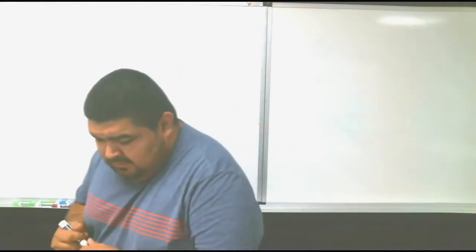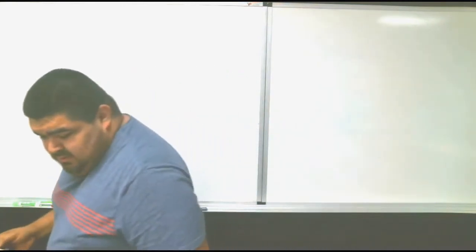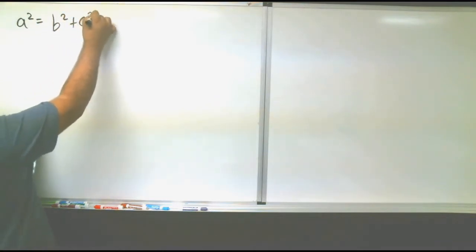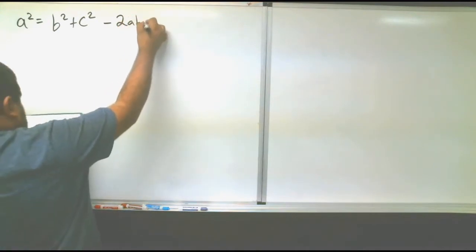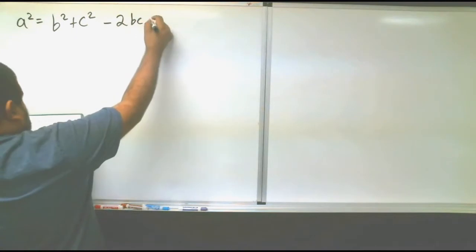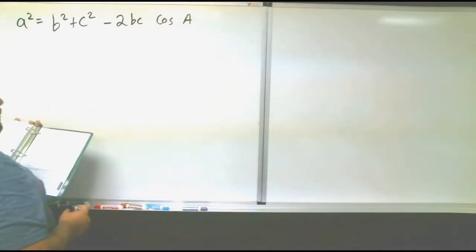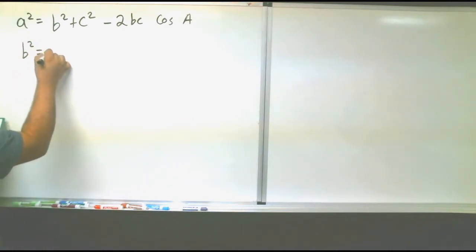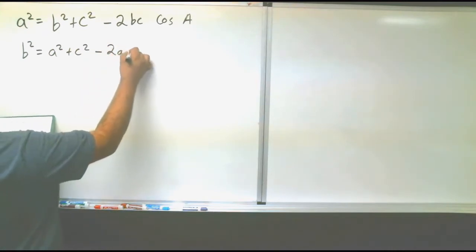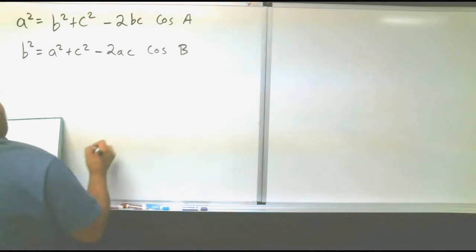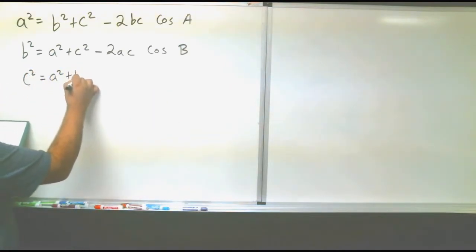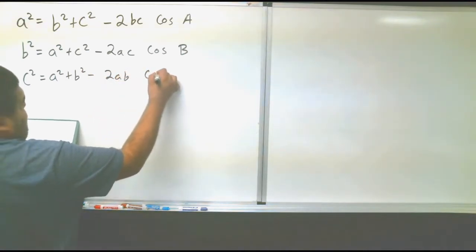Meaning that the equations we are using today are: a squared equals b squared plus c squared minus 2bc cosine of A. Then we have b squared equals a squared plus c squared minus 2ac cosine of B. Or c squared equals a squared plus b squared minus 2ab cosine of C.